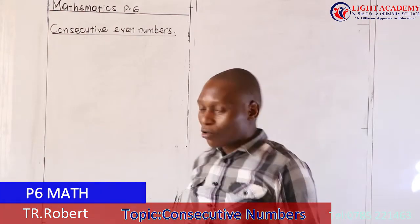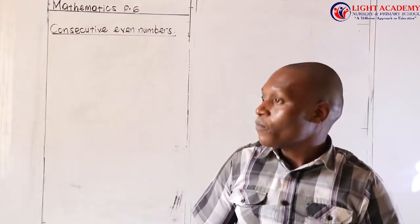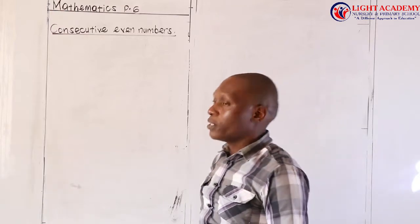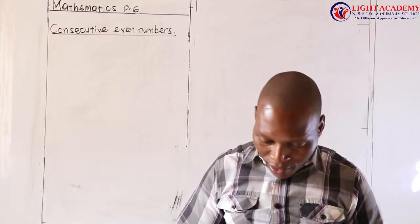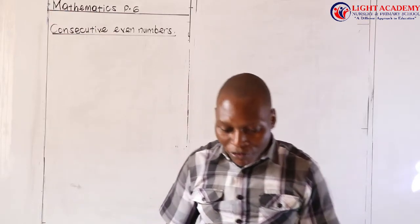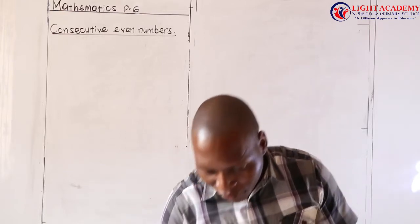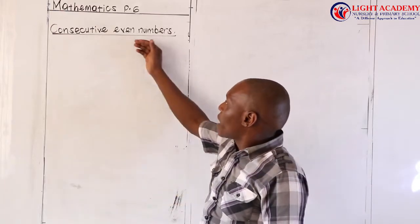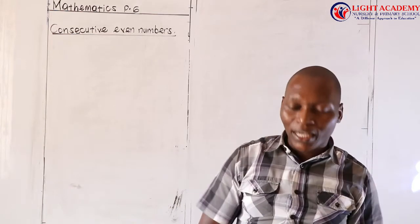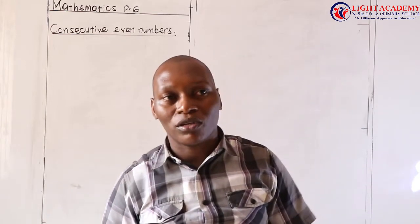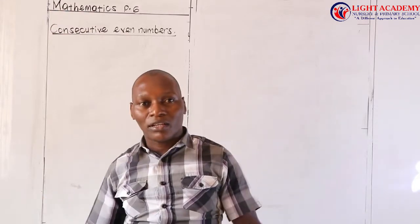I want to continue from where I stopped in the previous lesson. In our previous lesson, we discussed something concerning consecutive counting numbers. I think you must have done the numbers I gave as the activity of that lesson. So at this time, I'm presenting something concerning consecutive even numbers. Just like I explained in the previous lesson, if we talk about the word consecutive, it means giving something in its right order.